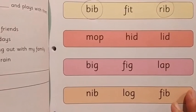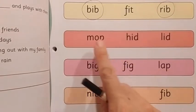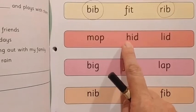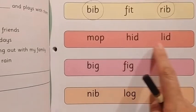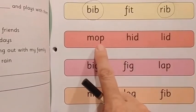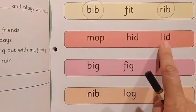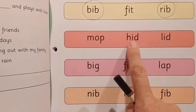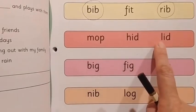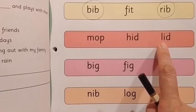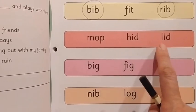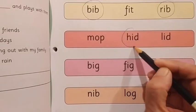Let us move on to the next set. It's M-I-B, Mib. M-O-P, Mop. H-I-D, Hid. L-I-D, Lid. Can you see 'op' anywhere here? No. Can we see 'id' anywhere here? Yes! We can find it here. So these two are rhyming words: H-A-I-D, Hid and L-E-I-D, Lid. So we are going to circle them.